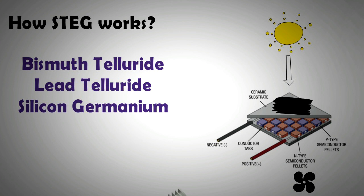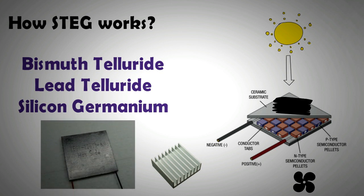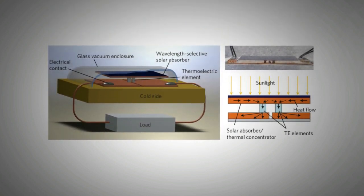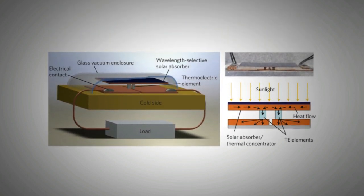Similarly, a heat sink is also employed on the cold side to increase the temperature gradient. Note that normal thermoelectric generators available in the market can withstand temperatures of up to 570 degrees Celsius. At MIT, the hot absorbing surface of STEG has been kept in a glass vacuum chamber to make use of the greenhouse effect to increase the temperature difference.